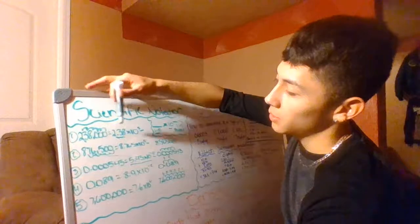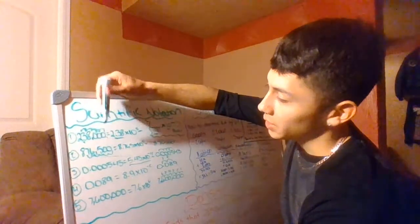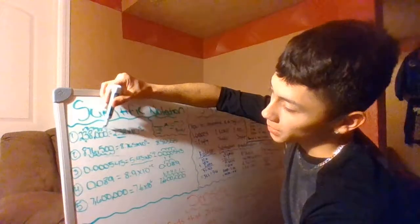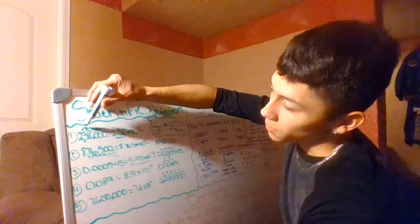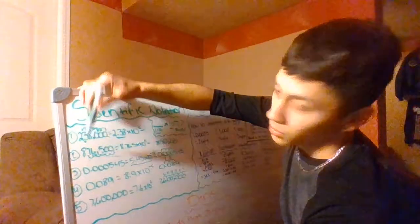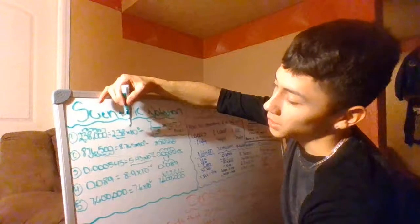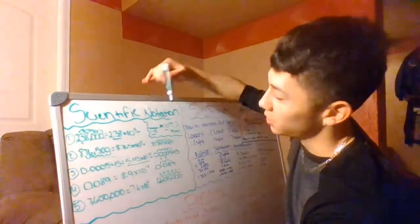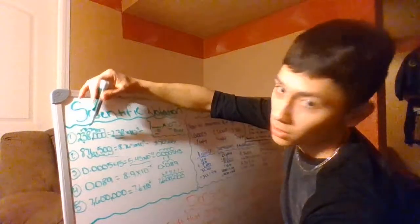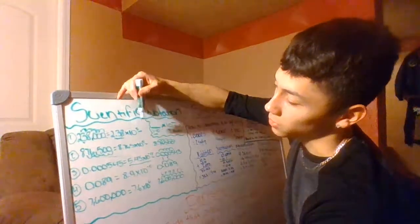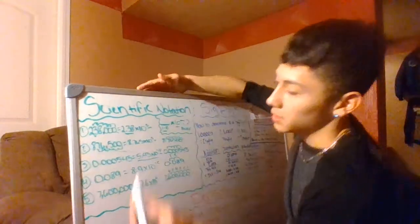You start with your decimal at the very end and move spaces to the left: 1, 2, 3, 4, 5. You put your decimal to make it 2.38, so the answer is 2.38 times 10 to the fifth. However many spaces you move to get to that decimal is your power — so you get five.